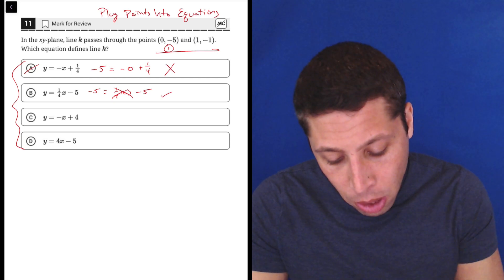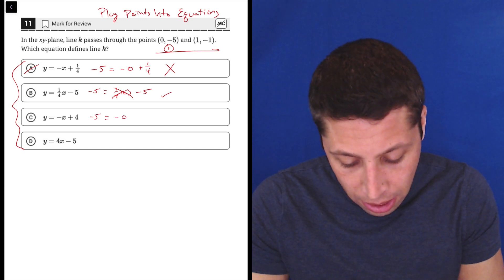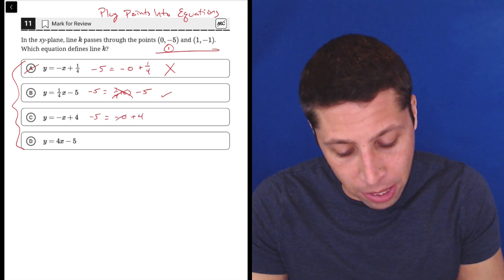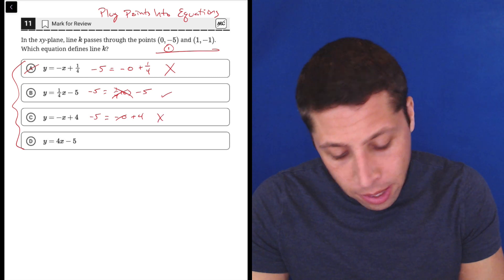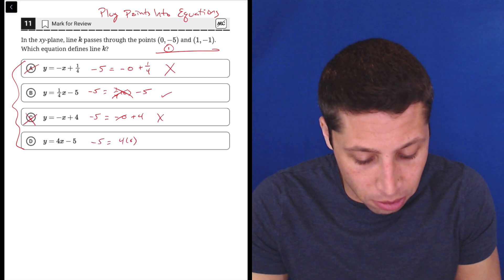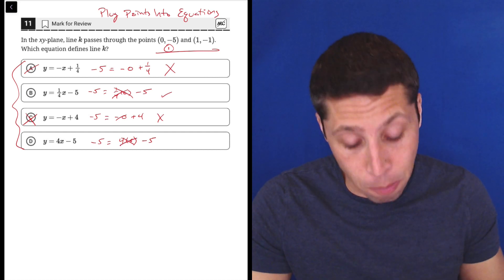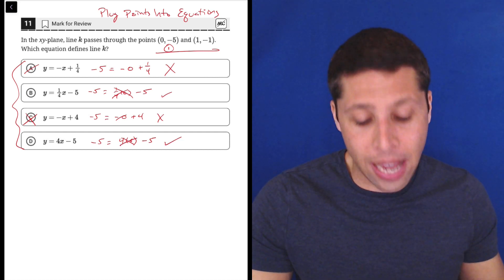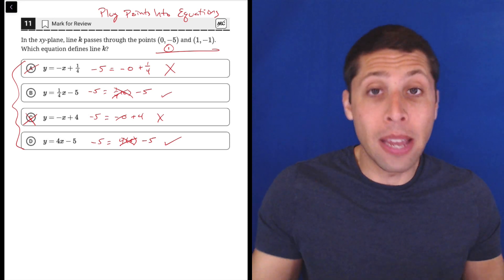But we have to keep going because it's possible that that point works in multiple answers. So this one would be -5 = 4. That's not true, so that's gone. But then -5 = 4(0) - 5. So again, the 0 cancels out that first bit, but it does work out that -5 = -5. So B and D both work.